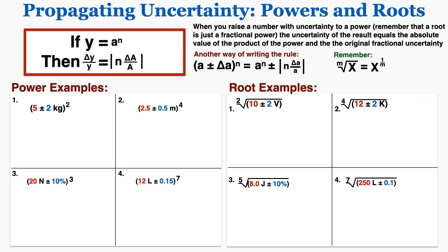The first problem says we have 5 plus or minus 2 kilograms squared, and the rule is telling me that I need to do something with the fractional uncertainty. So before I solve this problem I have to convert that number to a fractional uncertainty, and the way that I do that is by dividing the absolute uncertainty by the original number. The rule says that the uncertainty of the result is going to equal the power multiplied by the fractional uncertainty. So the uncertainty will be 2 — because that's the power — multiplied by the fractional uncertainty of 0.4.